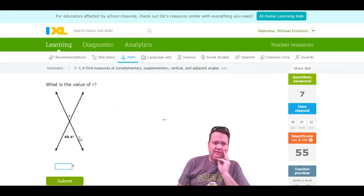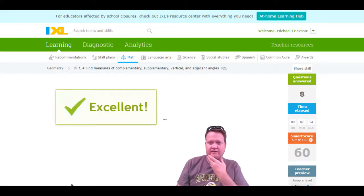And this one, what's the value of R? Well, you can see R is directly across. That makes it a vertical angle, and so R is also 48.4 degrees. We don't forget the decimal. And look at that, we got a score. We're at 55.